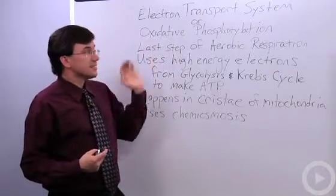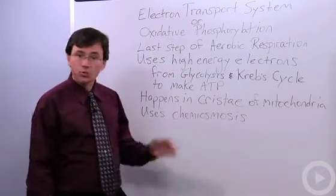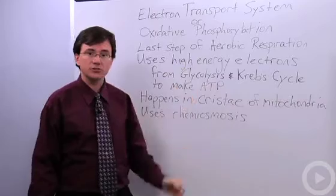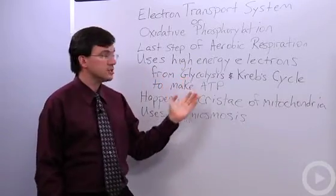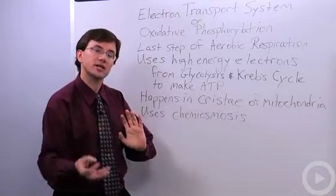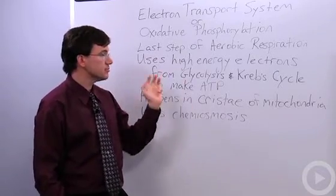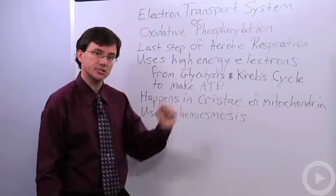Now as I said, it's the last step of aerobic respiration. What it does is it uses the high-energy electrons that were generated by the cell doing glycolysis and the Krebs cycle, putting them onto high-energy electrons, then the electron transport system uses those high-energy electrons to make some ATP.